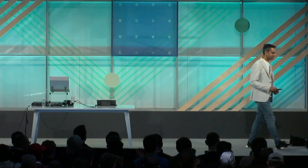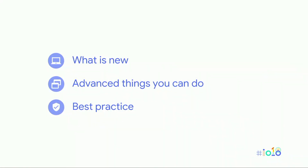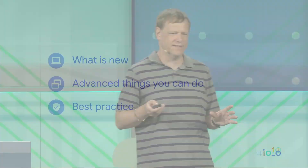Morning, everyone. I'm glad you could all join for today's talk. I'm here to talk about all our latest news — what we have done and what you can do to improve your application even more for a desktop environment. First: what is new? Then advanced things you can do — we've added a lot of stuff over the last year and we really want to show that. And last, best practices. When you follow these best practices, you'll have a better chance in the Play Store because you will bubble up, and we will make sure of that.